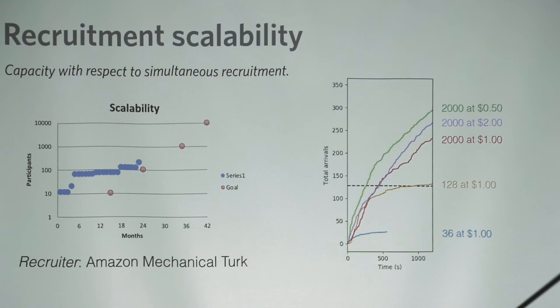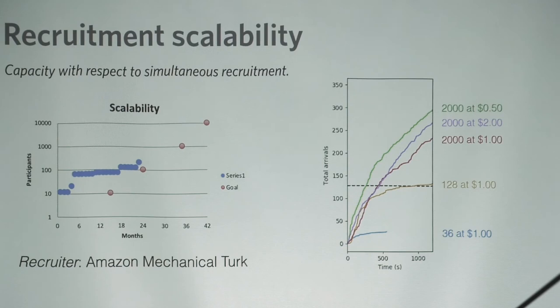If the HIT times out, Mechanical Turk would send us an assignment abandoned message back. That would decrement the quorum value, and then we'd let another person into the waiting room. But that requires the HIT to time out. So once they get into the waiting room, they are there — and they could ruin the experience for 9, 10, or 200 other people.